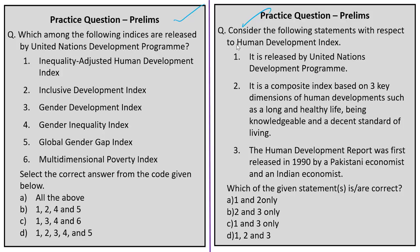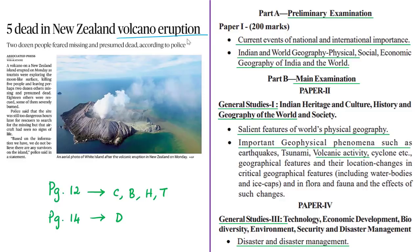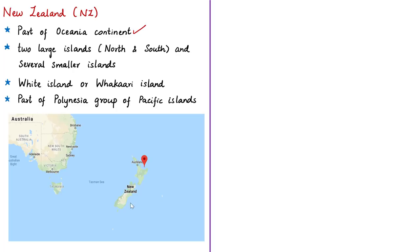The next article discusses the recent volcanic eruption in New Zealand. People have died due to a volcanic eruption that occurred on Monday at White Island (also known as Whakaari Island), located on the east coast of the North Island of New Zealand in the southwest Pacific Ocean. New Zealand is part of the Oceania continent, consisting of two large islands — the North Island and the South Island — and several smaller islands.